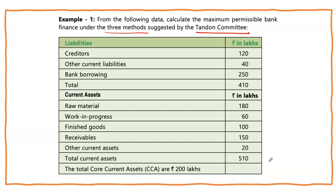Welcome to the fourth video on the working capital series. I have picked up this problem from the study material prescribed for CA Intermediate students. We have to calculate maximum permissible bank finance (MPBF) under the three methods suggested by the Tandon Committee. Even though there are three methods, only the first and second are in practice; the third method is considered very stringent and is not in practice.